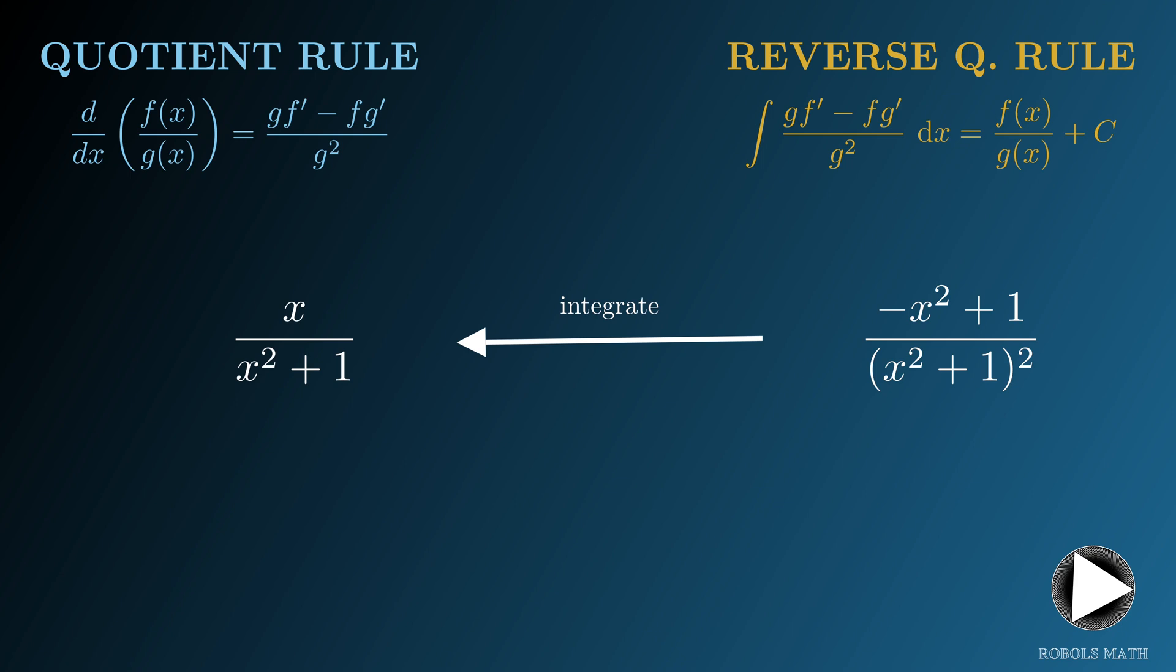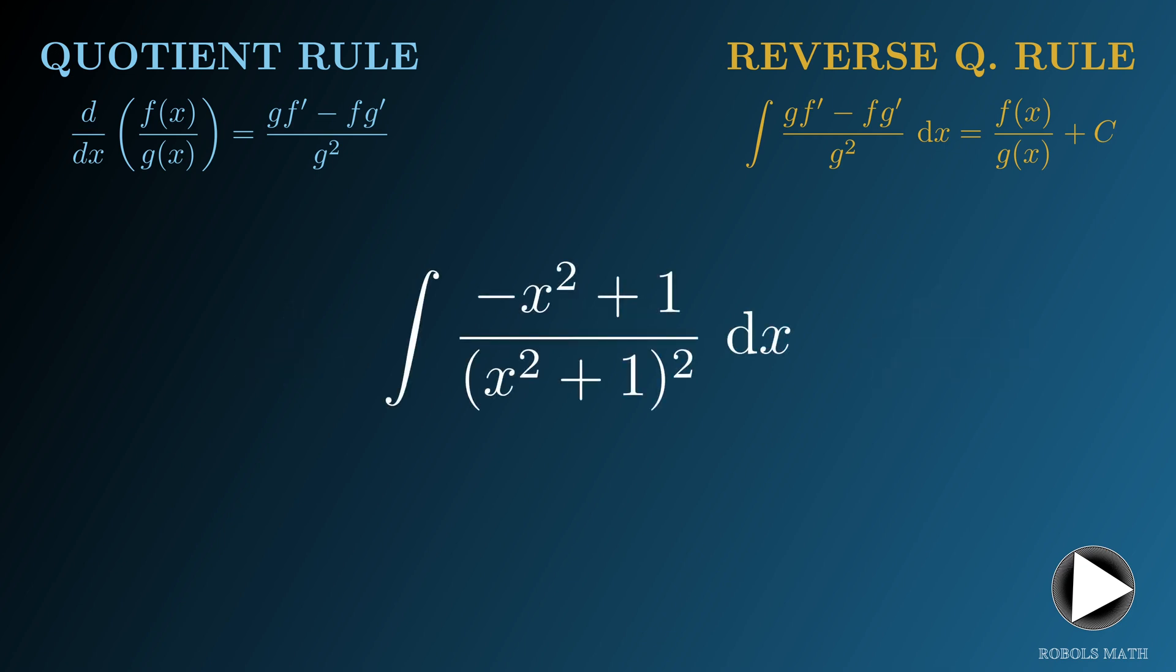For the purposes of illustration, let's suppose that we don't know yet the antiderivative of negative x squared plus 1 all over x squared plus 1 quantity squared. Just by looking at the integrand, what would give us a hint or why would we even consider that the antiderivative for this one is a quotient? Think about it for a while.